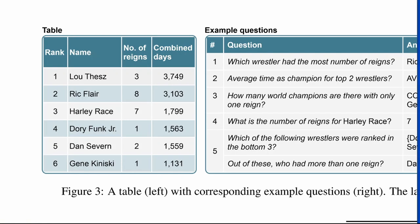Have a look at this table on the left. In each row you can see the name of a wrestler, the number of times that wrestler has been a champion, and the combined number of days where that wrestler has been a champion — the sum of the length of all their championships. There's also a rank column, ranked by the combined days attribute. This table is interesting by itself, but on the right we have a couple of questions — let's try to answer them.